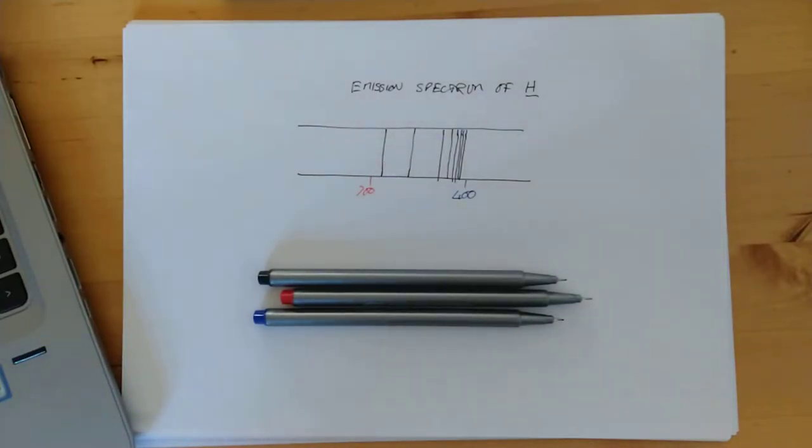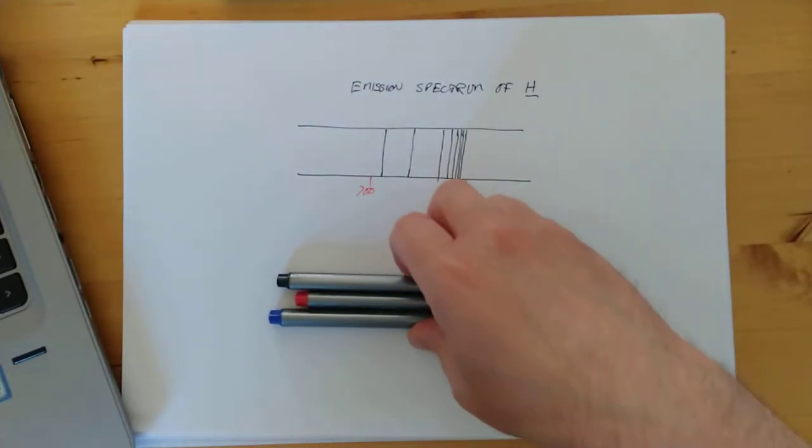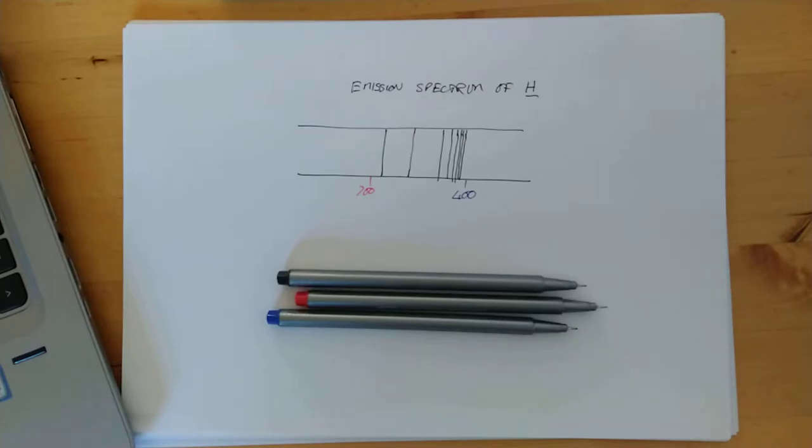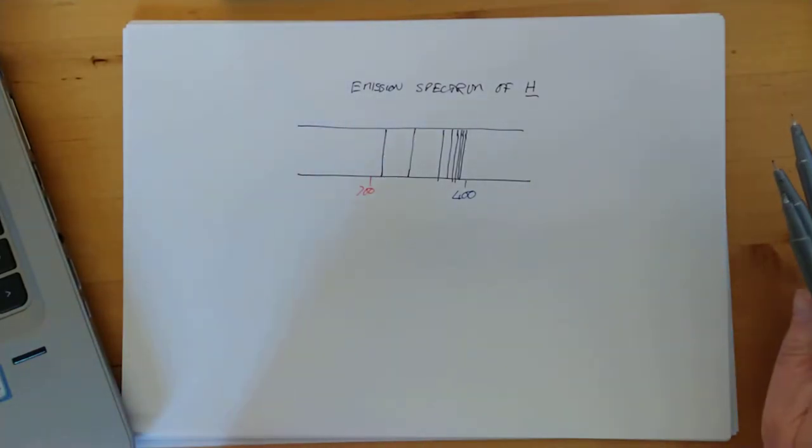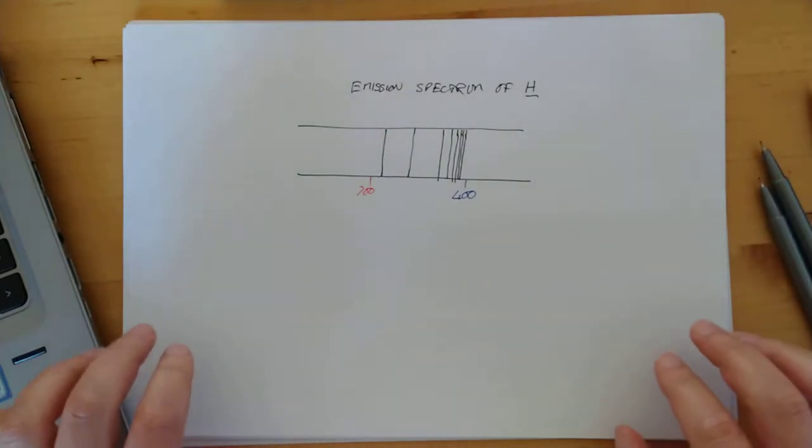Good afternoon folks. Welcome back to Advanced Higher Chemistry. We are moving on from electromagnetic spectrum, energy and light, and we're moving into hopefully slightly more new stuff for the physics people amongst us. We're moving to look at electrons and how they interact with light.